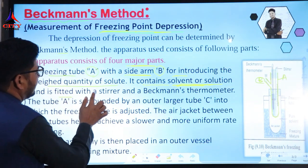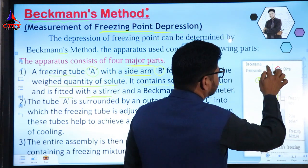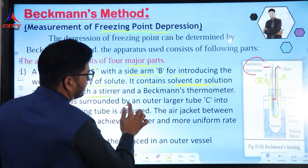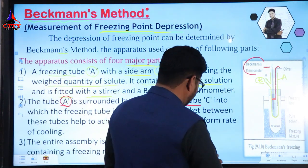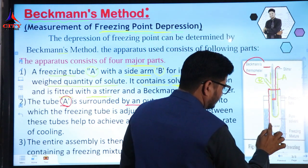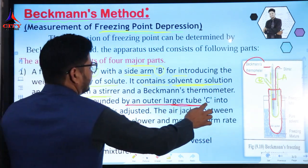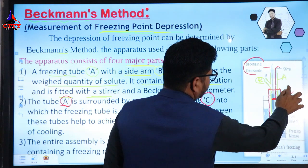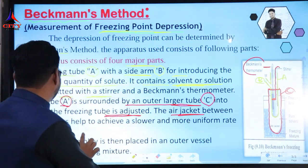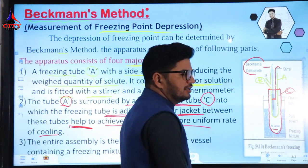The freezing tube is fitted with a stirrer placed here, and we add Beckman's thermometer here. The tube is surrounded by an outer larger tube. The air jacket between these tubes helps to achieve slower and more uniform rate of cooling.